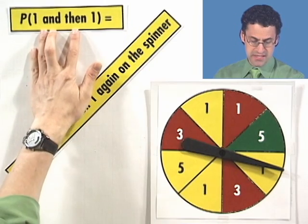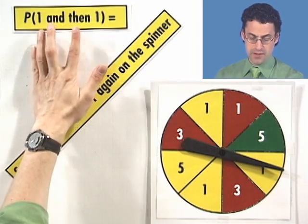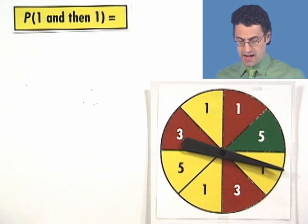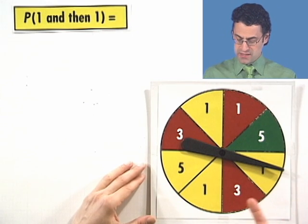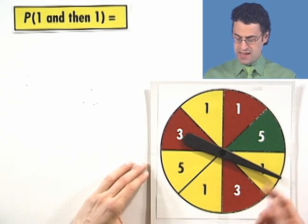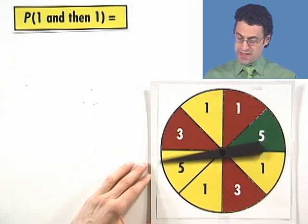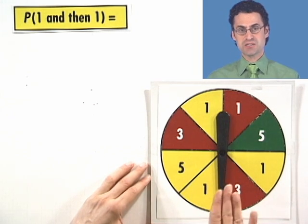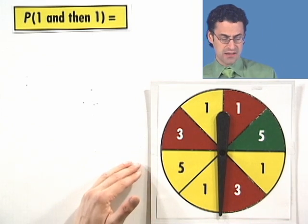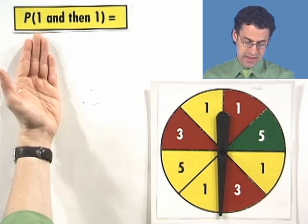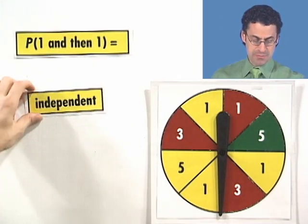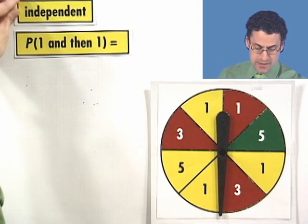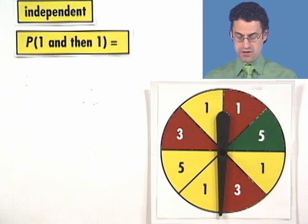Let's see how we'd actually compute this. We want to find the probability that we see a one and then another one. Does the spinner know what it landed on? Knowing that I'm on a one now — is that going to change what I'm going to spin next? The answer is no. This spinner has no memory. When the occurrence of one event has no impact on the second event, we call these independent events. Two events are independent if the occurrence of one has no impact on the occurrence of the other.